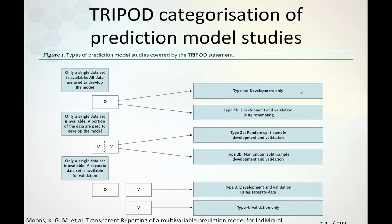This importance of external data is recognized in the medical statistical literature. Here is the TRIPOD standard for prediction models — not deep learning prediction models, but statistical prediction models — where the major separation is between type 3 and 4 studies, which apply external data, and types 1 to 2, which use only a random subset of the development data.